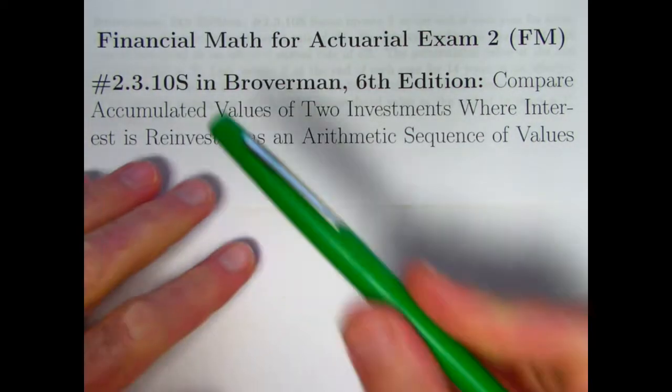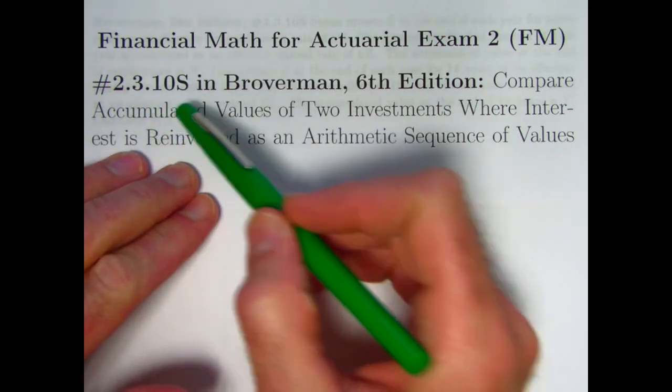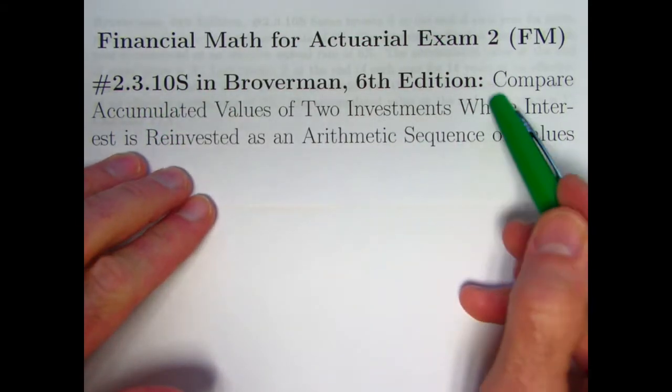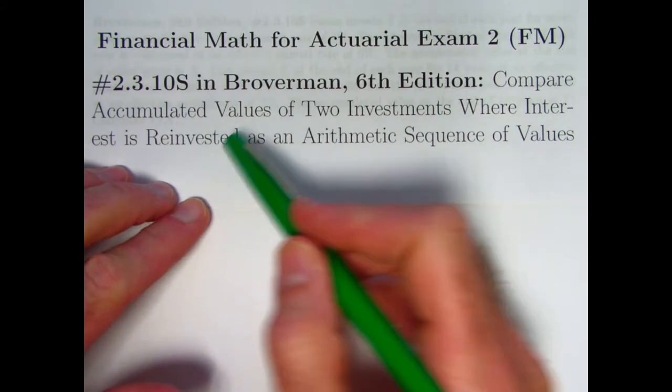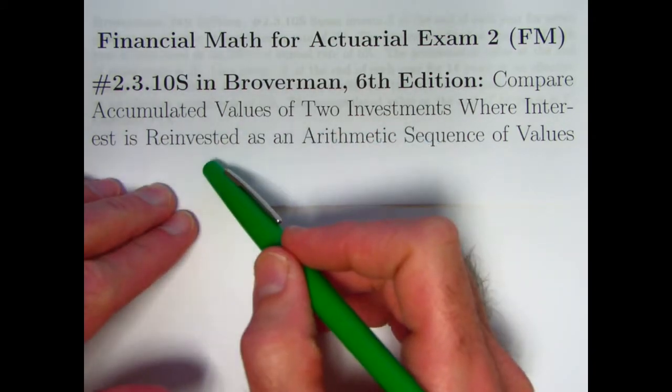In this video we're going to go back to doing old exam problems. It's going to correspond to problem 2.3.108 in the sixth edition of Broverman, where we are comparing accumulated values of two investments where interest is actually reinvested in new accounts.